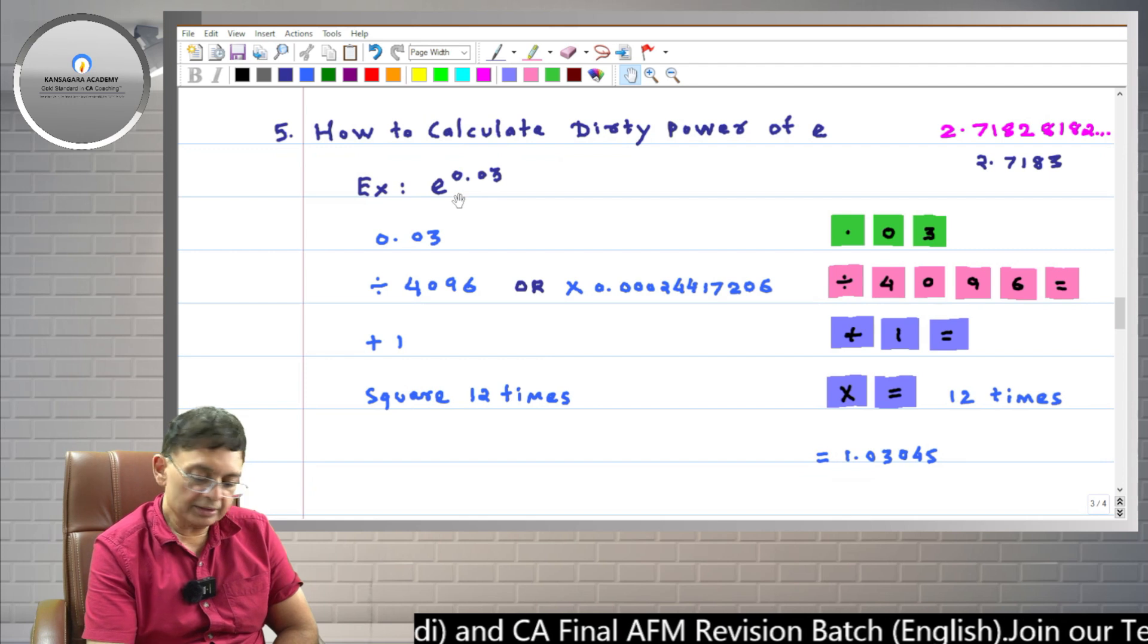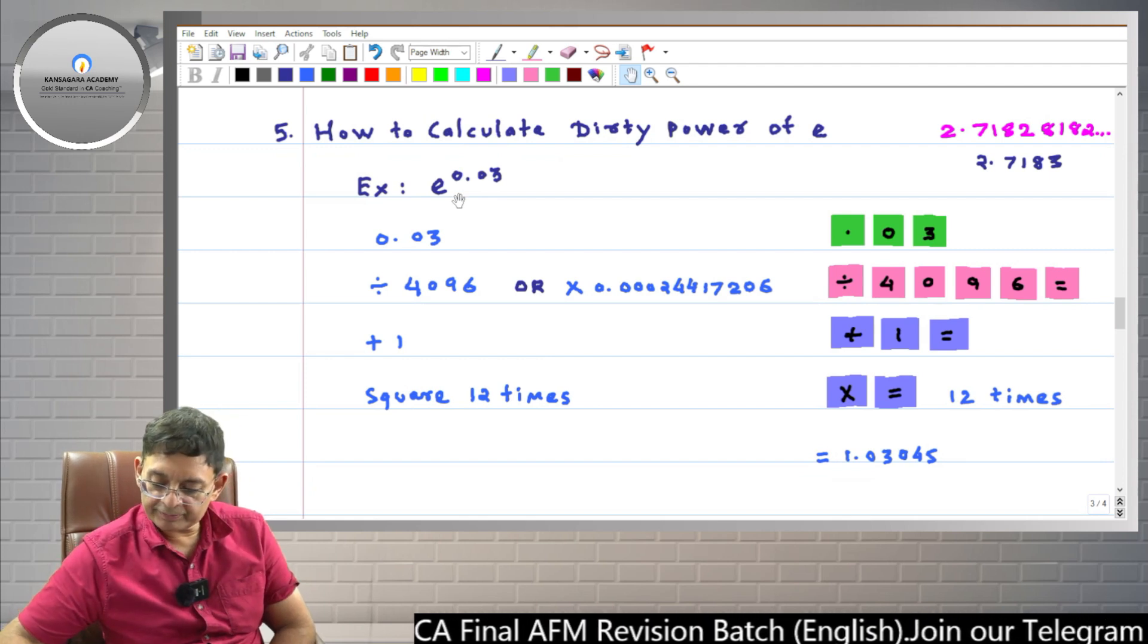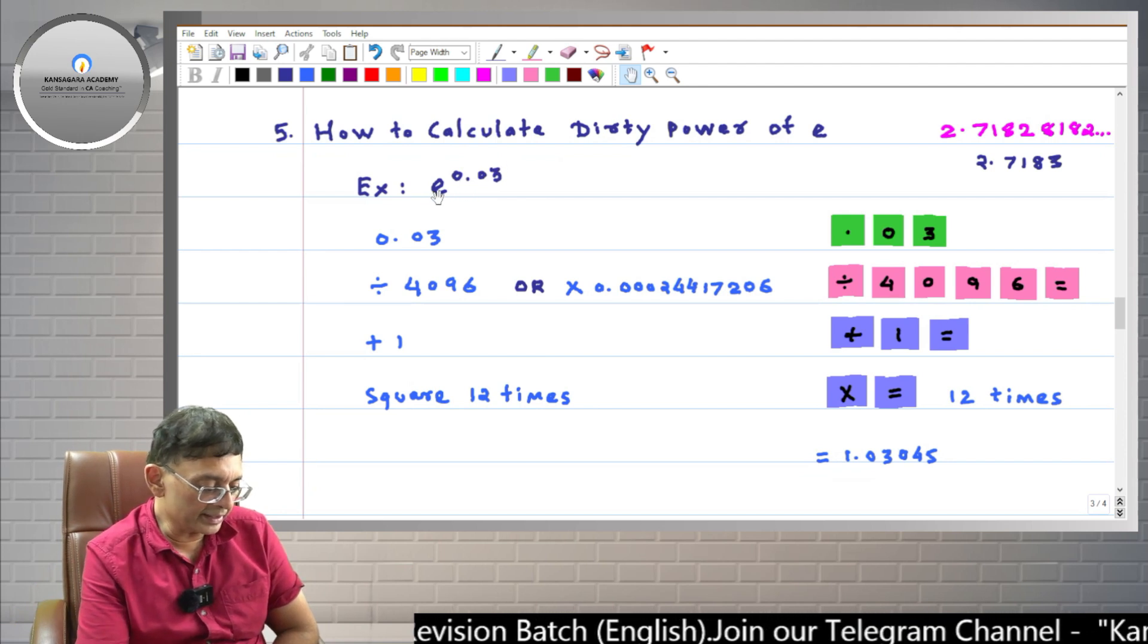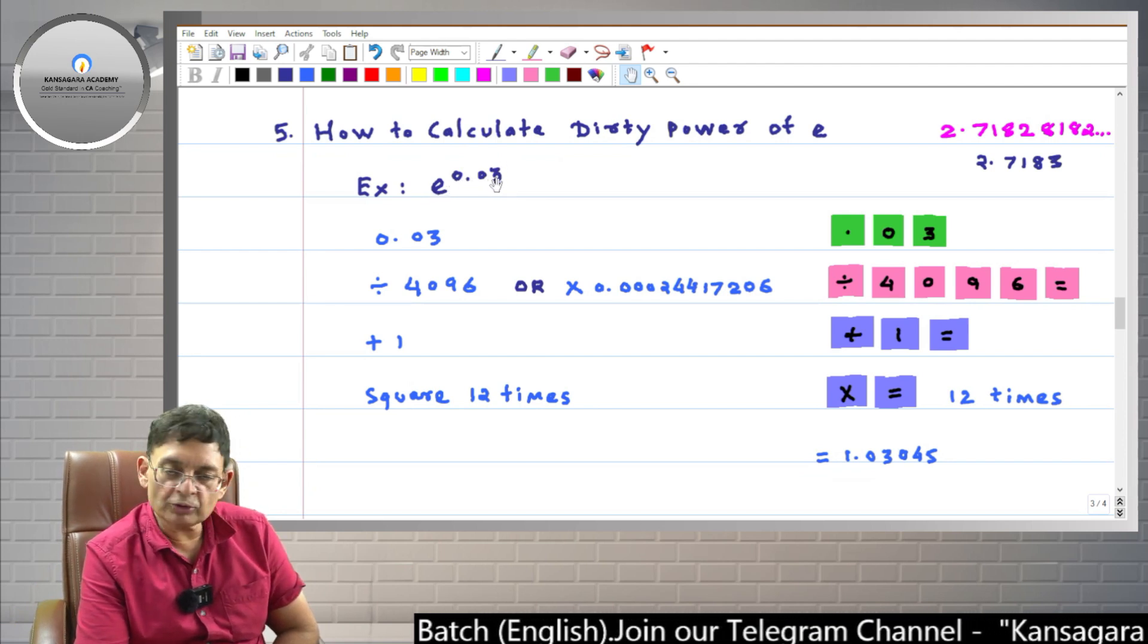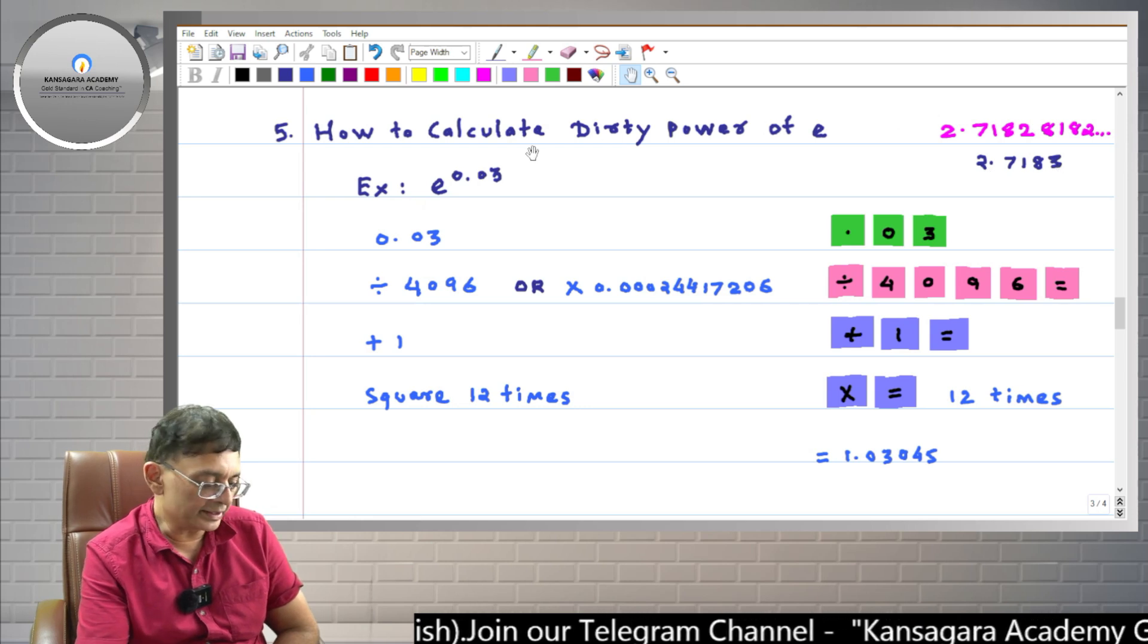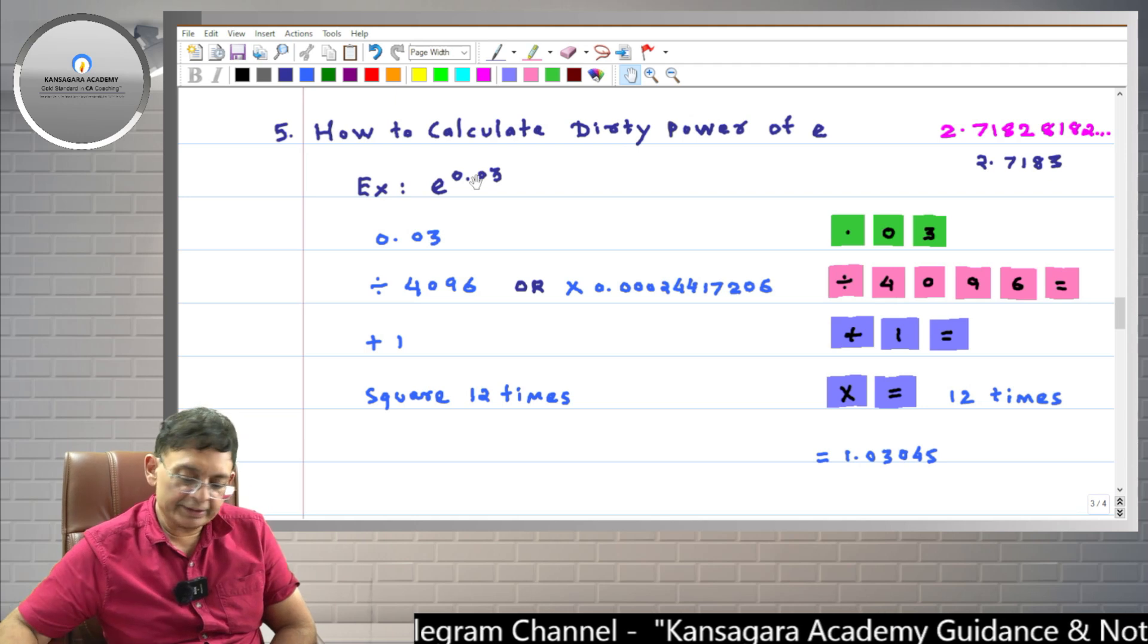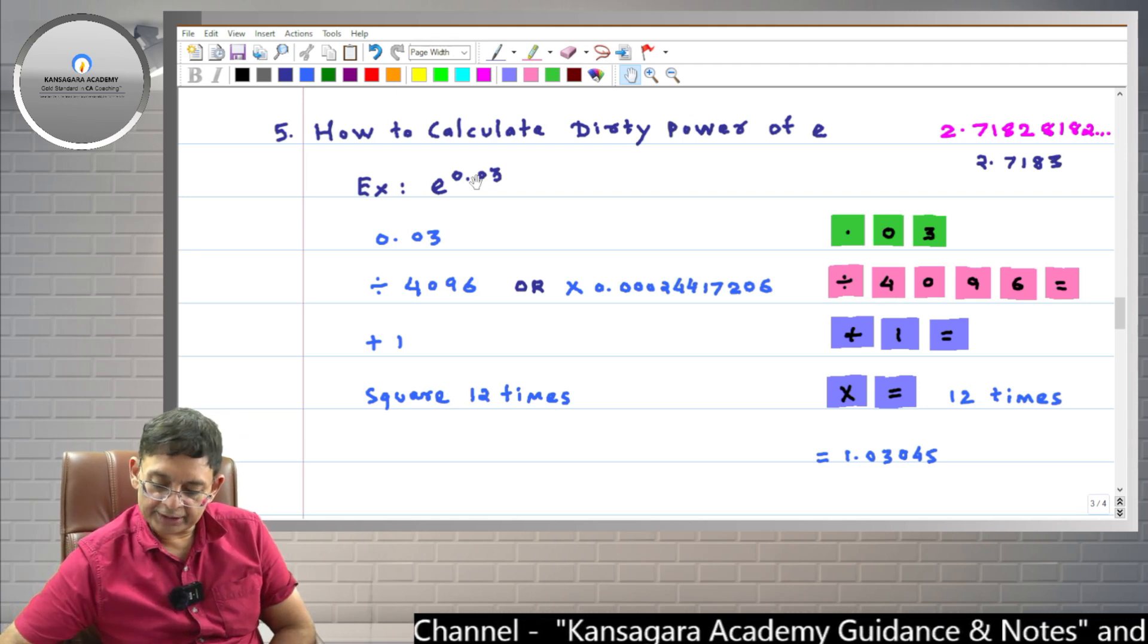We will take this example. You take out your simple calculator. Now enter the power first. So here, E is the base, 0.03 is the power. E means 2.7183. So you enter the power first, friends. So I am entering the power: 0.03.